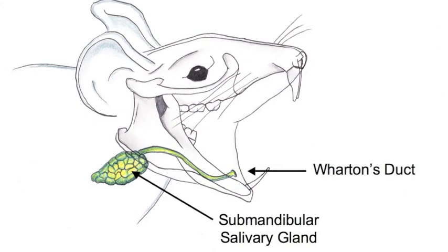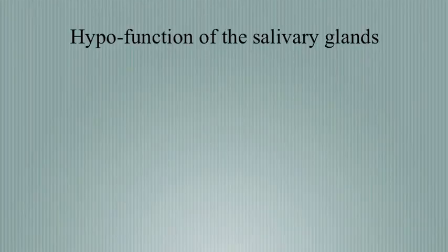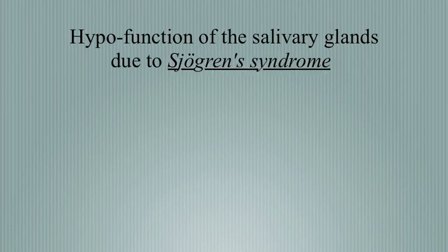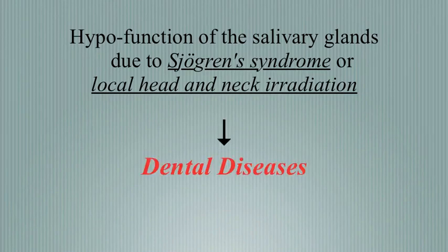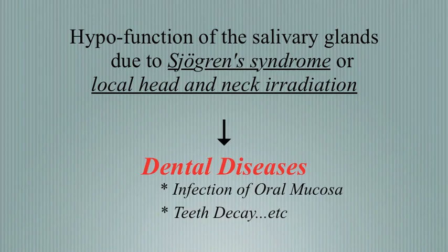For this video, Trypan Blue Solution is used as a dye to visualize the cell infusion. Hypofunction of the salivary glands is one of the most common side effects of Sjögren's Syndrome and therapeutic irradiation for cancer treatment in the head and neck regions. Malfunction of the salivary gland can often lead to dental diseases such as infection of the oral mucosa and tooth decay.